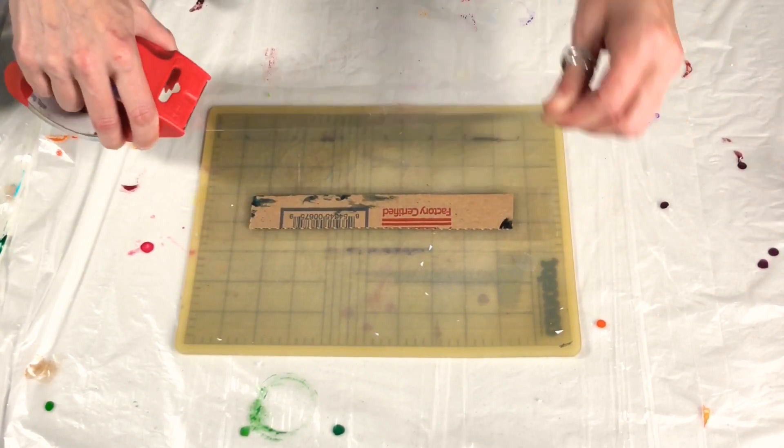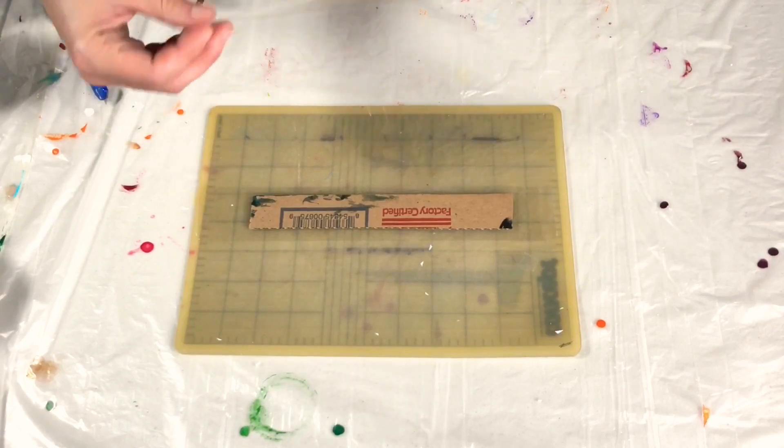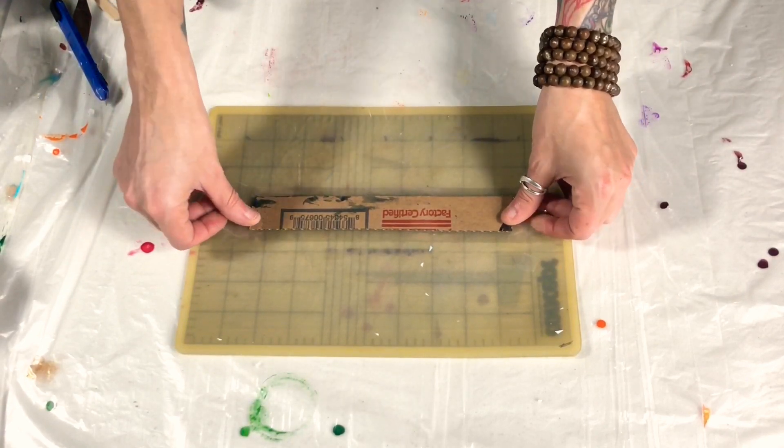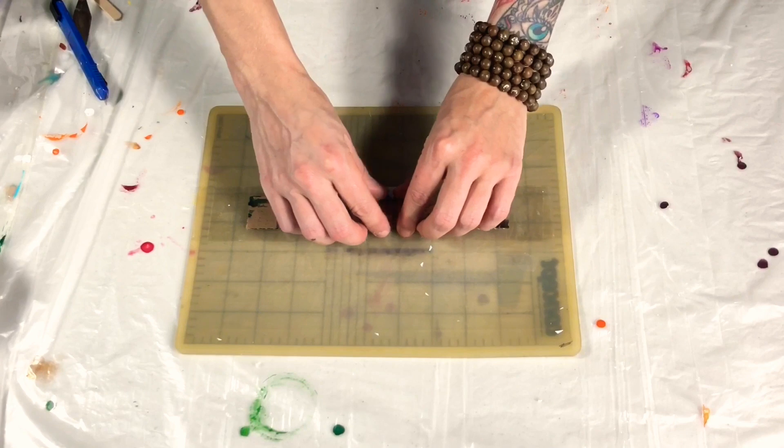And then take another piece and stick it to the other side so that the pieces that were overhanging touch and they make a seal.